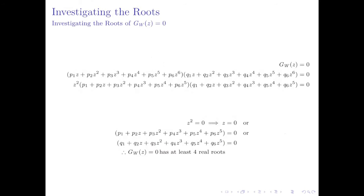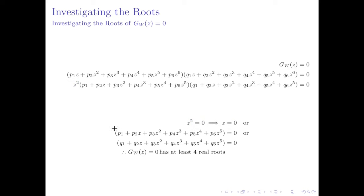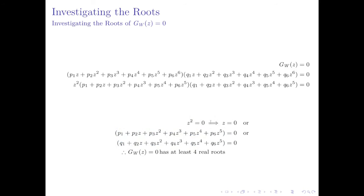When we have functions like this, one useful approach is to look at the roots. So we set g_w of z equal to zero. It's helpful to not have expanded earlier, because we've got our two brackets already partially factorised equal to zero. We can take out another factor of z², so z² = 0 meaning z = 0, giving two z = 0 roots. Or the first bracket equals zero, or the second bracket equals zero. Since both brackets are polynomials of the fifth degree, they must each cross the x-axis at least once, so each must have at least one real root. Together with the two z = 0 roots, g_w(z) = 0 has at least four real roots — and this is a very useful fact.